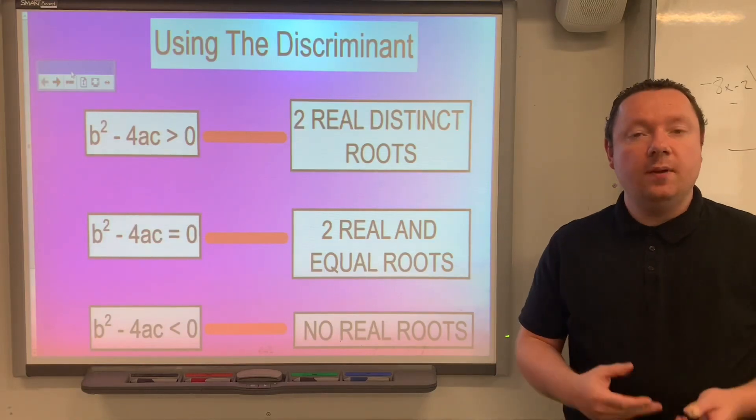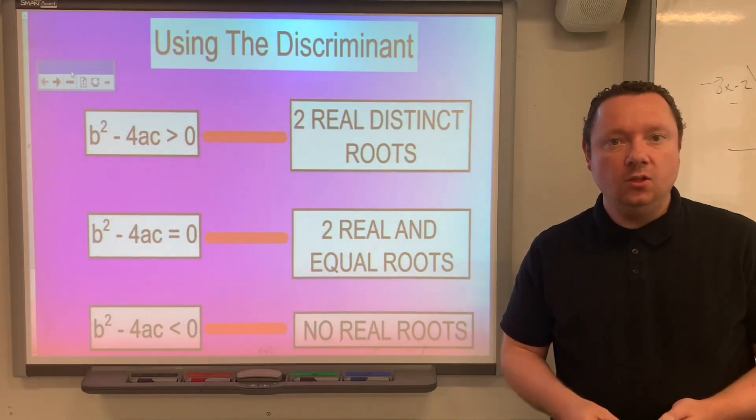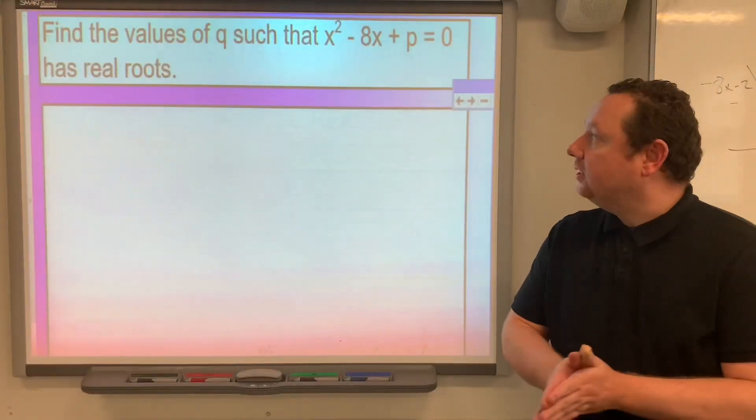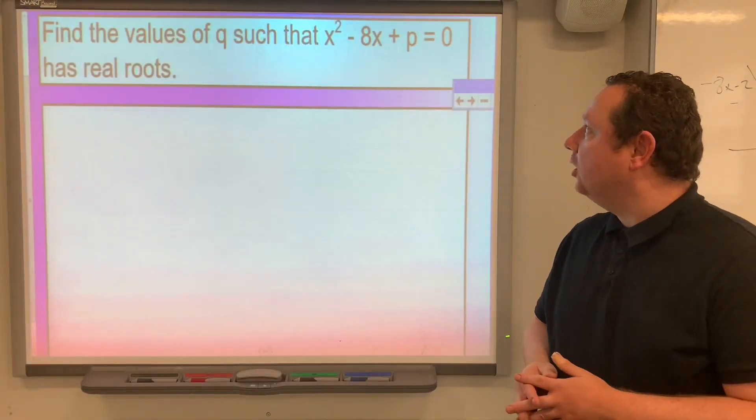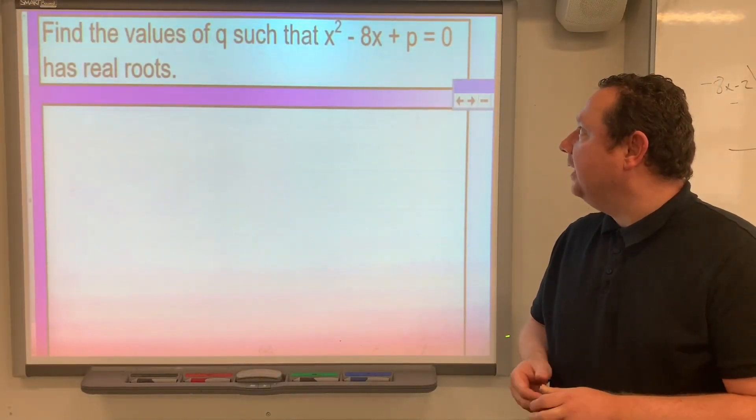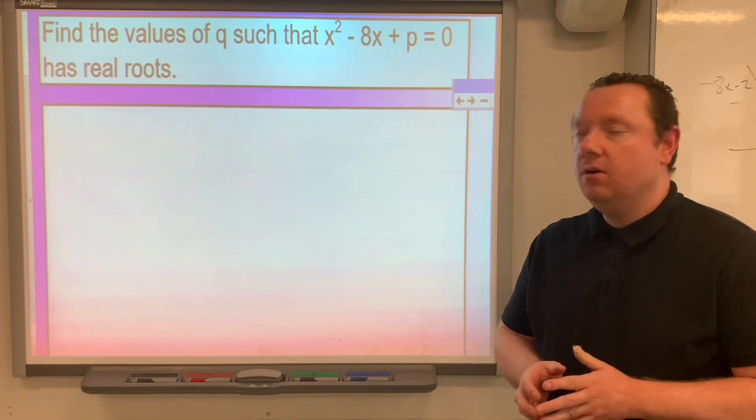And you need to know this to be able to solve problems and find unknowns in a quadratic. So the first example: find the values of q such that x squared minus 8x and p equals zero has real roots.